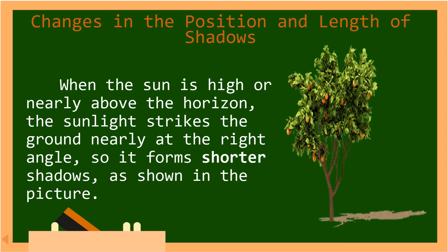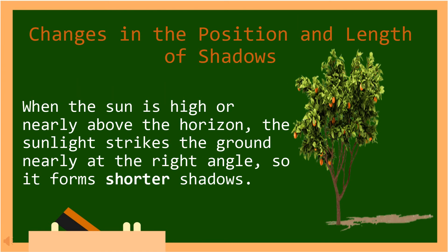When the sun is high or nearly above the horizon, the sunlight strikes the ground nearly at the right angle. So it forms shorter shadows, as shown in the picture below. In Tagalog, kapag ang araw ay mataas o halos sa itaas ng abot-tanaw, ang sikat ng araw ay tumatama sa lupa halos sa tamang anggolo. Kaya't bumubuo ito ng mas maiikling mga anino, tulad ng ipinapakita sa larawan sa ibaba.